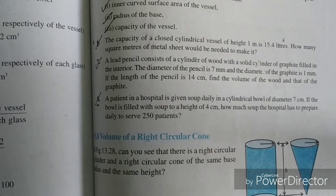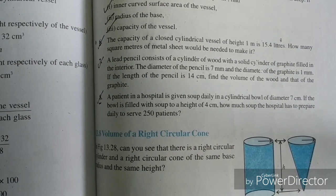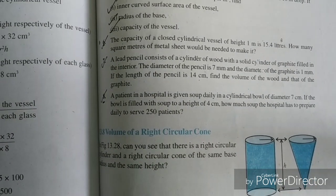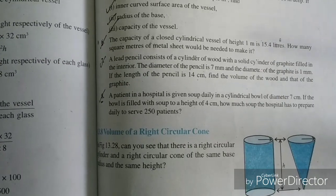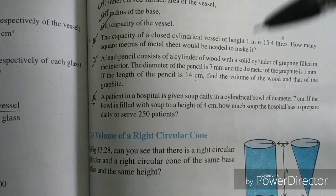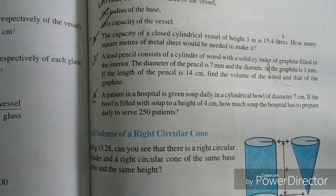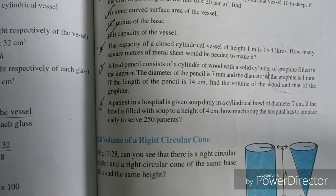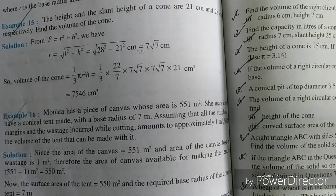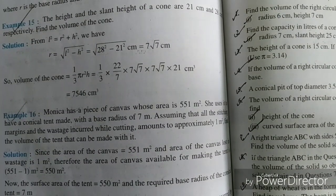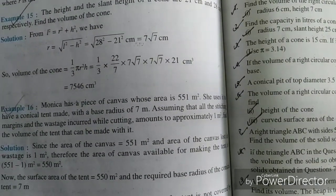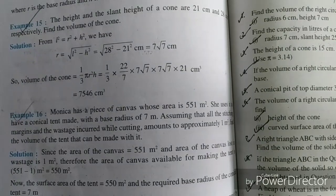Your exercise 13.6 has simple questions with direct formulas for most of them. But you can do the 6th question and the 7th question. The 7th question is a little difficult, so once again you will see it and prepare for this exercise. Then your example number 16 on page 232 is a little different from the exercise questions, so review it once again and look at the solution.